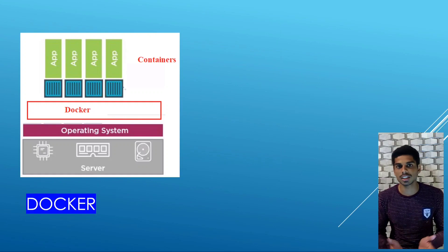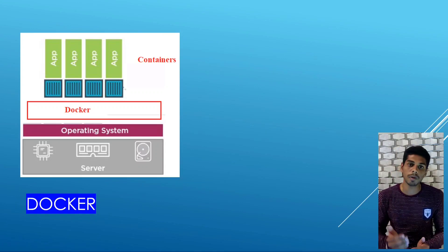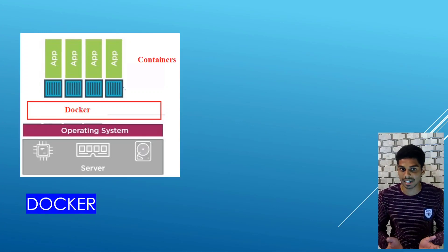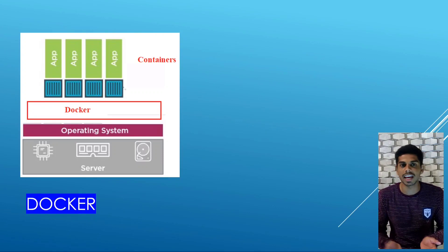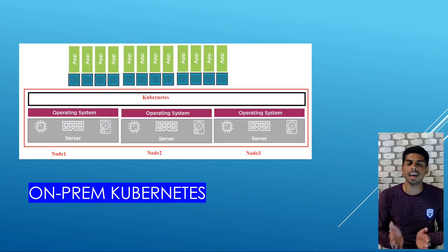Now that we know the difference between Docker and hypervisor, let's talk about the architecture of Docker. As already discussed, we have a base server, on top of which is the operating system, on top of which we install the Docker engine. Once Docker is installed, you can create multiple containers — similar to virtual machines — and provision any kind of application onto a container. That is how hypervisor and Docker are differentiated.